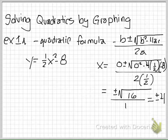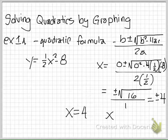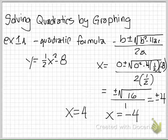The square root of 16 is plus or minus 4. So using the quadratic formula, we come up with x equals 4 and x equals negative 4. Those are our two solutions. The solution to a quadratic is what x is when y is 0.